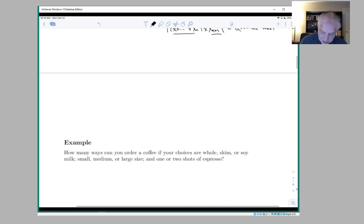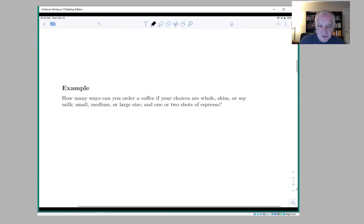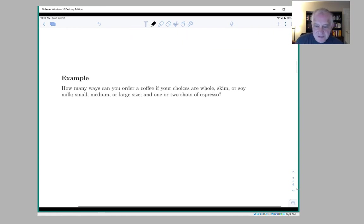Okay. Let's do another example here, a very concrete example. So suppose you want to count the number of ways you can order a coffee with the choices of whole, skim or soy milk, small, medium or large size, and one or two shots of espresso. So here you have, if you want to put it into the context of Cartesian products, you have three sets.